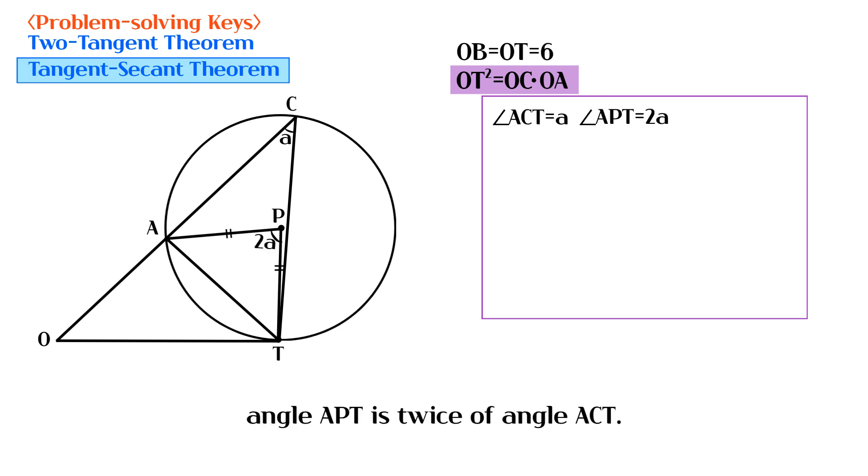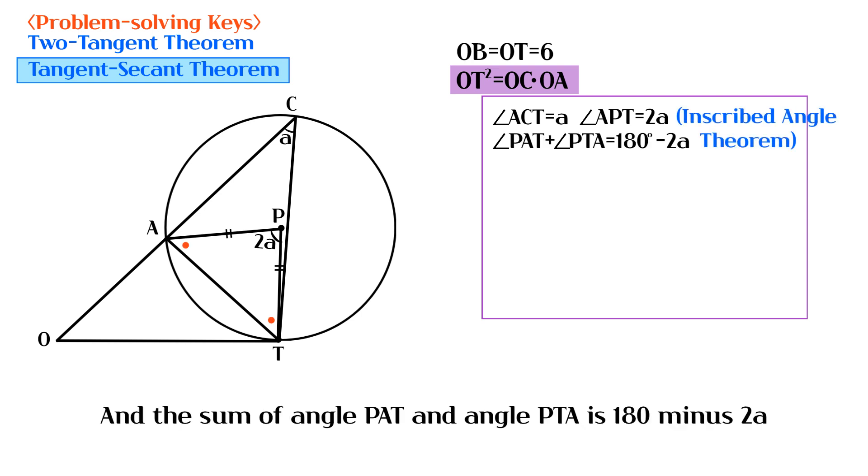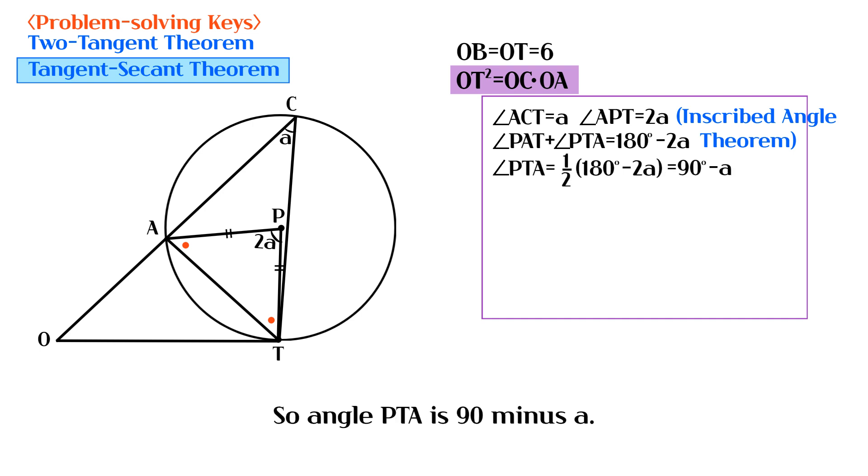angle APT is twice angle ACT. And the sum of angle PAT and angle PTA is 180 minus 2A. So angle PTA is 90 minus A.